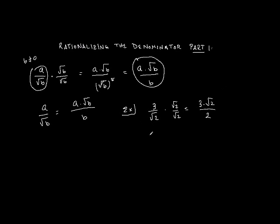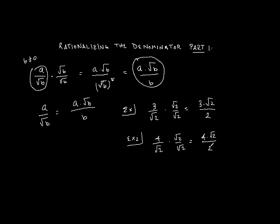A second example: 4 divided by the square root of 2. I multiply the top and the bottom by the square root of 2, and I get 4 times the square root of 2 divided by 2. Now I can reduce: the 2 becomes a 1 and the 4 becomes a 2, giving me 2 times the square root of 2. So 4 divided by the square root of 2 is equivalent to 2 times the square root of 2.